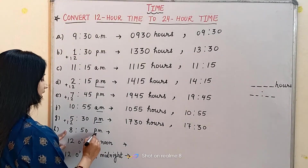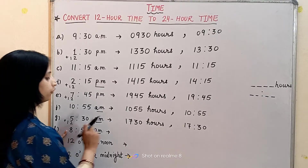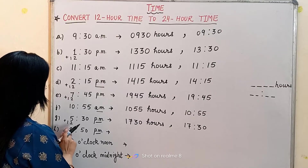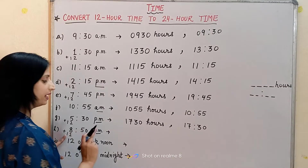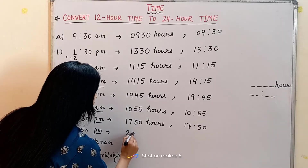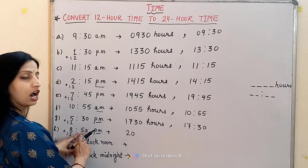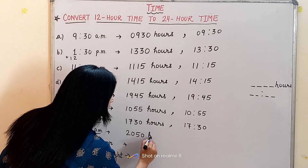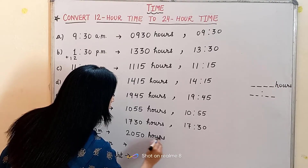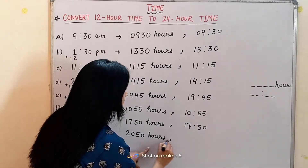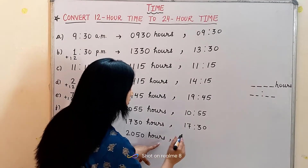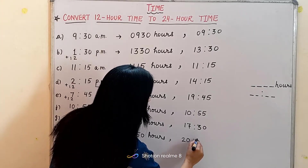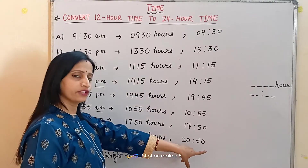The next example is 8:50 PM — again we will add 12. 8 plus 12 is 20, so we write 20 here. The minutes are 50, so we write 2050 hours. In the colon form, we write 20:50 — that is 20 hours 50 minutes.